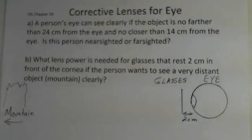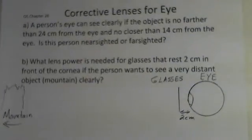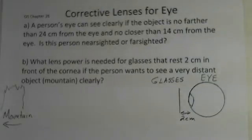Professor Clements with you as we consider optics related to the eye. Someone who has a vision difficulty. This person cannot see objects clearly if they are more than 24 centimeters from the eye and no closer than 14 centimeters. So is this person nearsighted or farsighted? They can't see mountains. They are nearsighted.